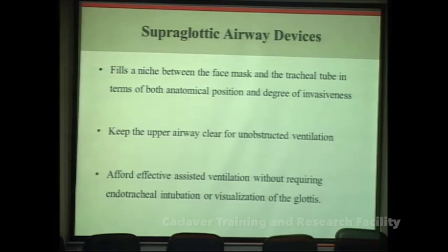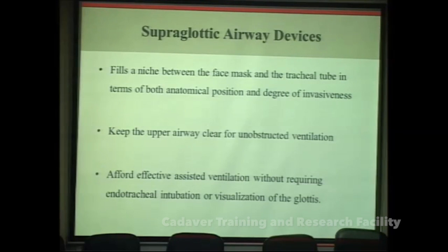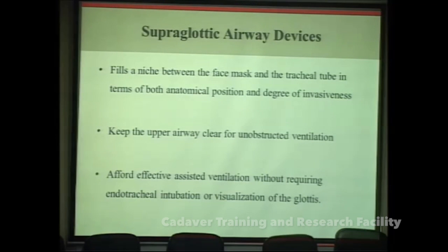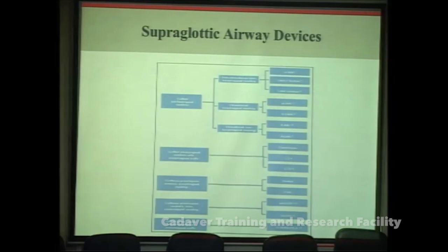Tracheal intubation is the gold standard method, but it has its own set of complications — it causes a stress response, more sore throat, and other complications. Supraglottic airway devices are minimally invasive devices that keep the upper airway clear for unobstructed ventilation and afford effective assisted ventilation without requiring endotracheal intubation or visualization of the glottis.